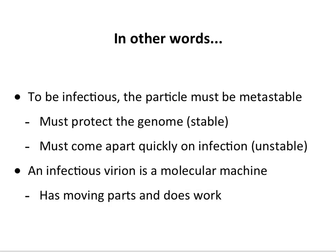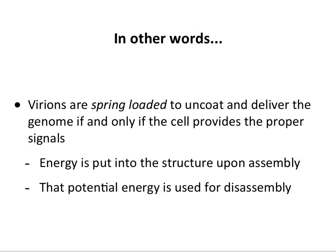For a virus to be infectious, it has to be metastable. You have to protect the genome — you have to have a stable virus particle that travels from person to person in the air or on objects — but at some point it has to come apart. Going from that stable to uncoated position is a property of metastability. Viruses are often said to be spring-loaded: when they are assembled, they are loaded in a specific confirmation, and a trigger has to release the spring so the genome can come out. When we assemble the particles we use energy, and that energy is released upon uncoating.